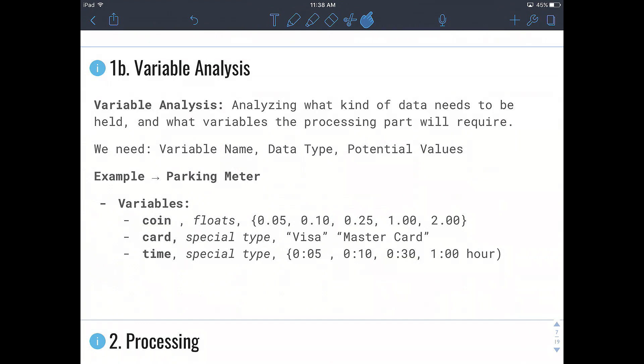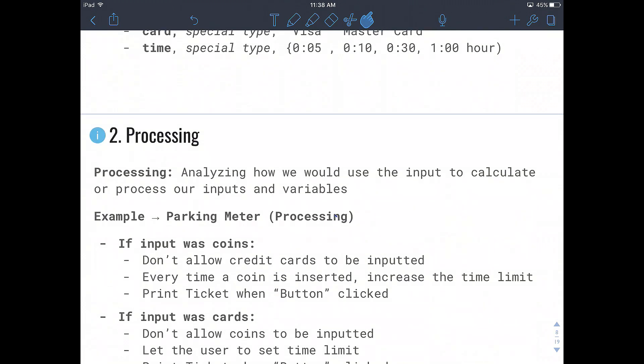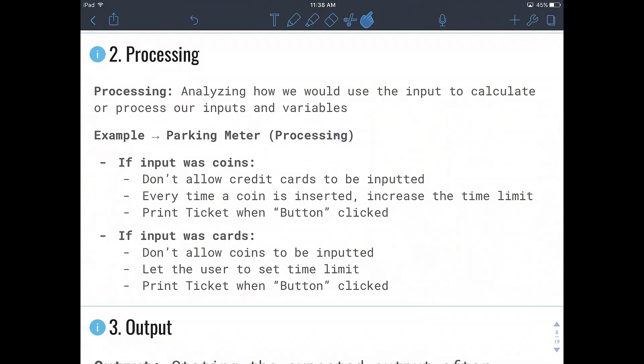Then after we have analyzed the inputs and the variables, we look at processing, where we're analyzing how we would use the input to calculate or process our inputs and variables to solve a given problem. So for our parking meter, if our input was coins, we don't allow credit cards to be inputted. And every time a coin is inserted, we increase the time limit by the respective time. And then when the print ticket button is clicked, we'll print a ticket.